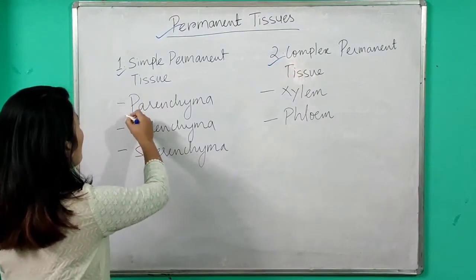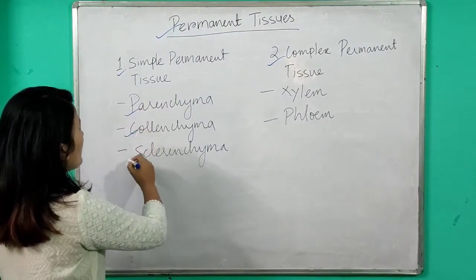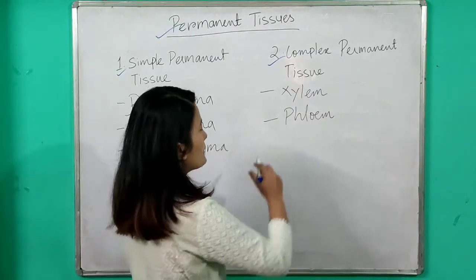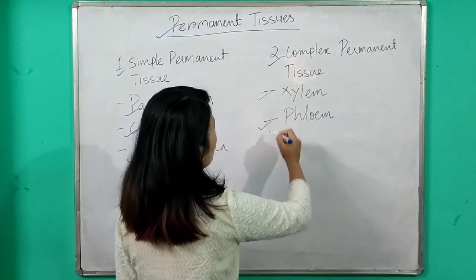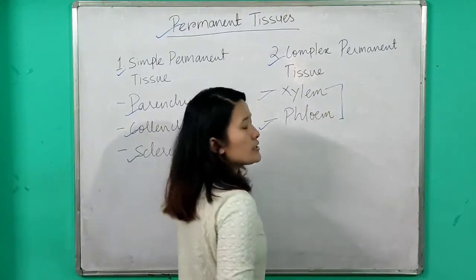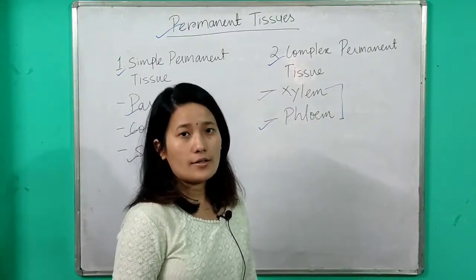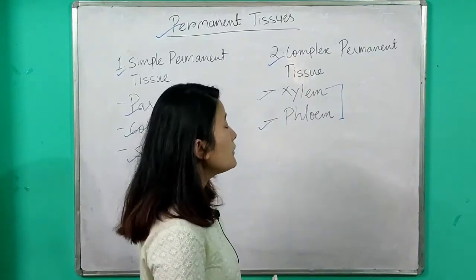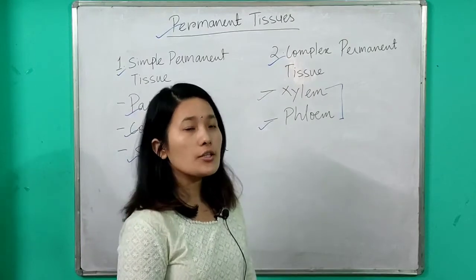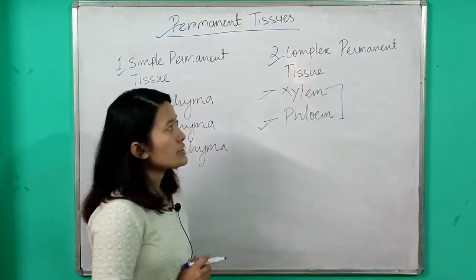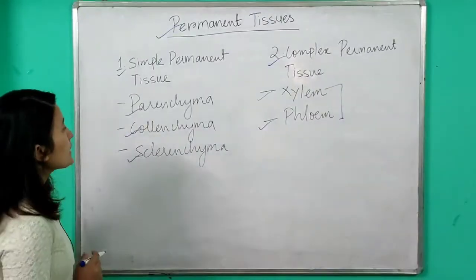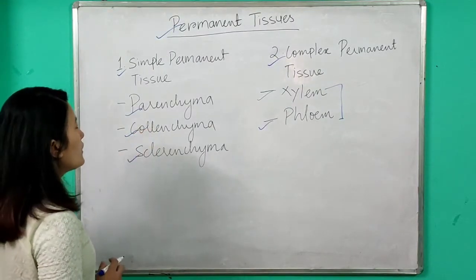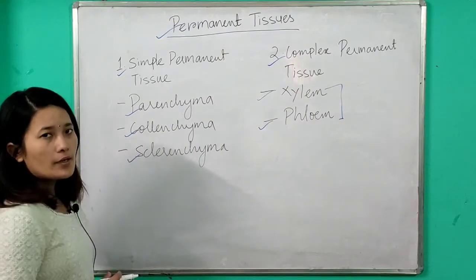Simple permanent tissue is of three types: parenchyma, colenchyma, and sclerenchyma. Complex permanent tissue is of two types: xylem and phloem. Together they form the transportation system of a plant — xylem helps in conduction of water and phloem helps in translocation of food. In today's class we will discuss in detail the structure of parenchyma, colenchyma, and sclerenchyma and their functions.